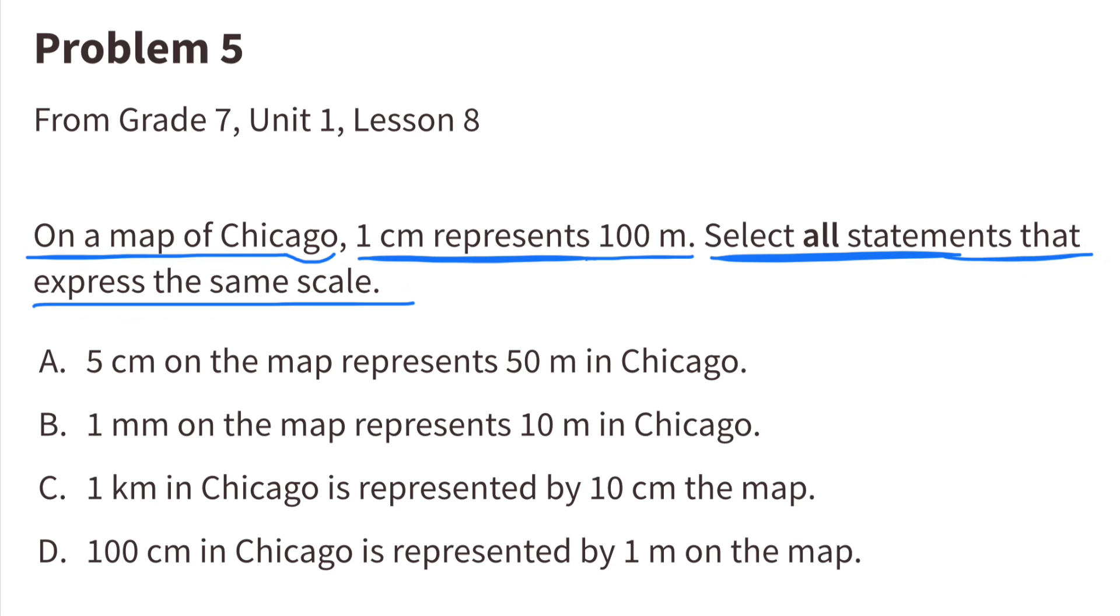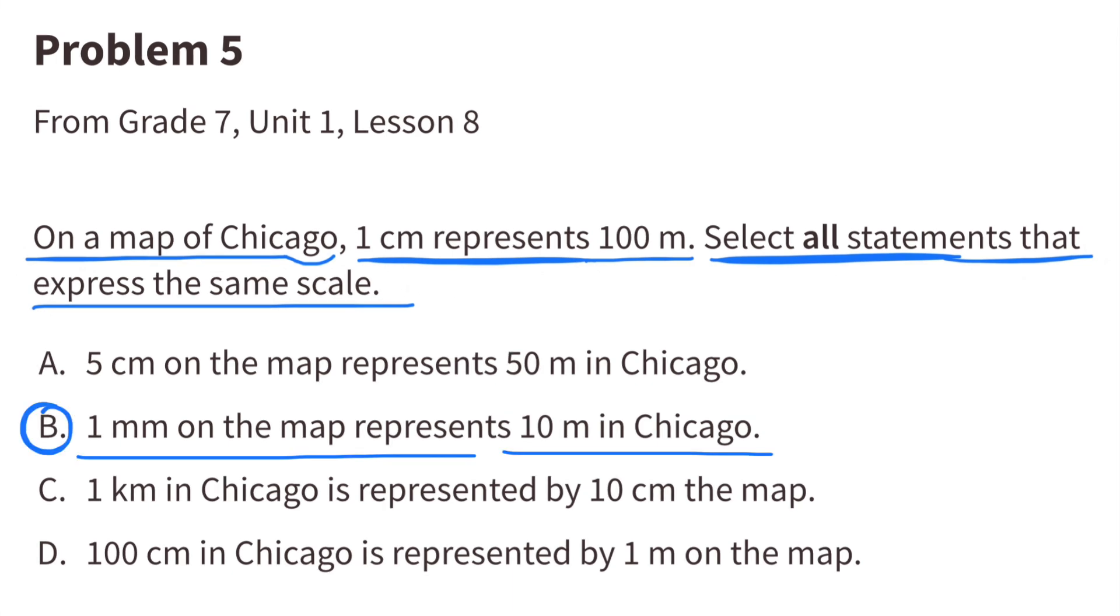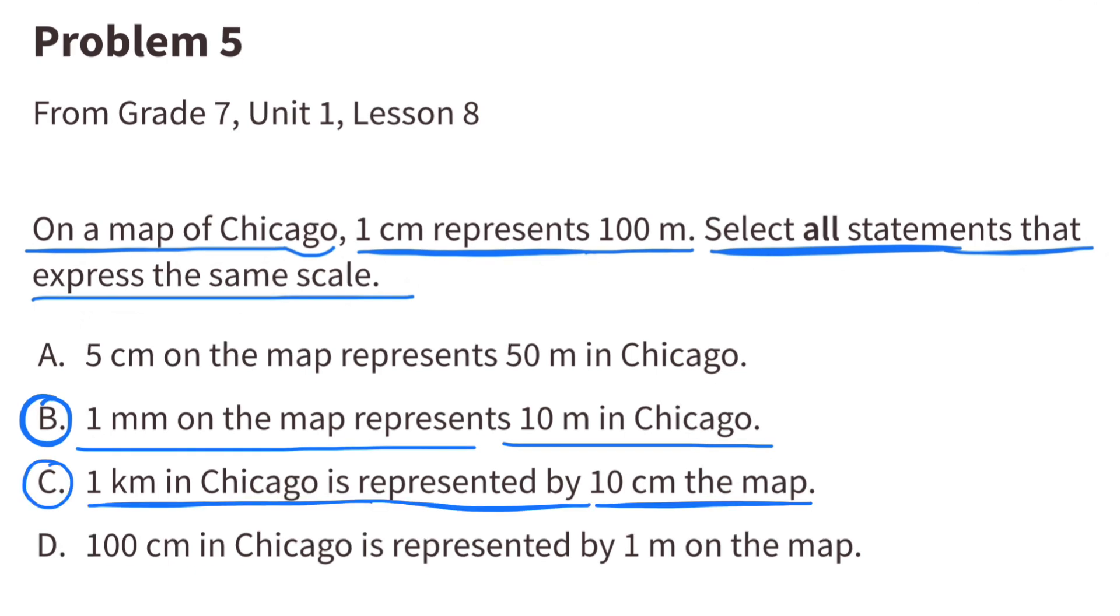Number 5. On a map of Chicago, 1 centimeter represents 100 meters. Select all statements that express the same scale. B represents the same scale because 1 centimeter divided by 10 equals 1 millimeter, and 100 meters divided by 10 equals 10 meters. C represents the same scale because 1 centimeter times 10 equals 10 centimeters, and 100 meters times 10 equals 1 kilometer.